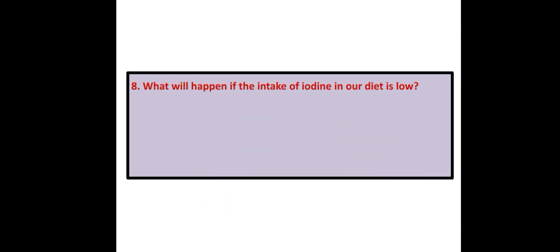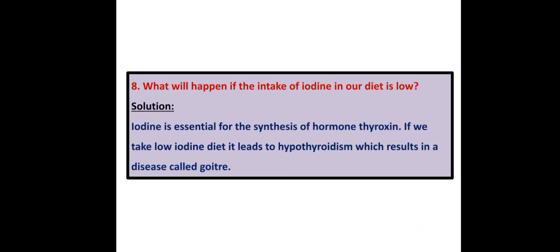What will happen if the intake of iodine in our diet is low? Iodine is essential for the synthesis of the hormone thyroxine. If we consume a low-iodine diet, it leads to hypothyroidism, which results in a disease called goiter.